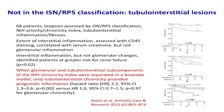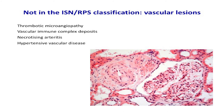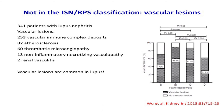Vascular lesions in lupus are incredibly common but are not included in the classification. In a study of 341 patients, the vast majority had important vascular lesions — the most significant being thrombotic microangiopathy. The survival plot for patients whose biopsy shows TMA is striking. It's a very important lesion, but it's not included in the lupus classification.